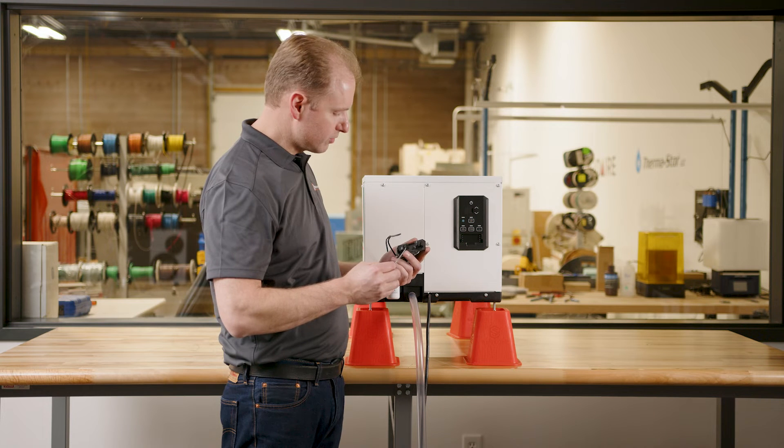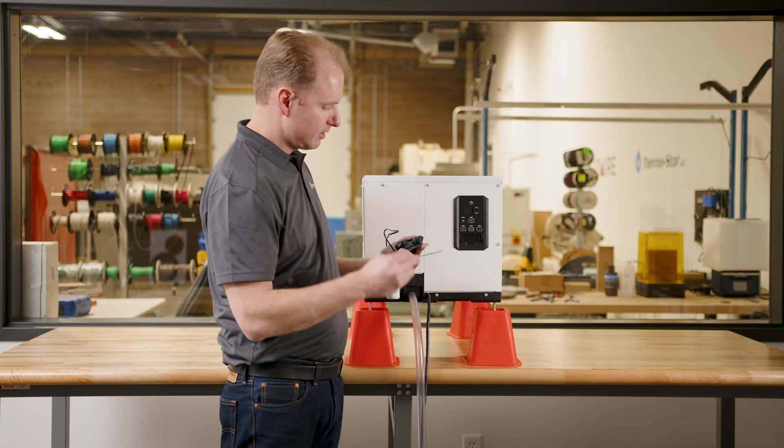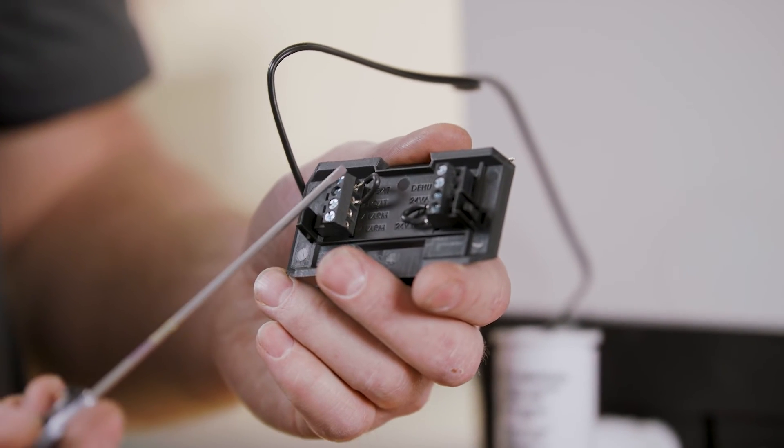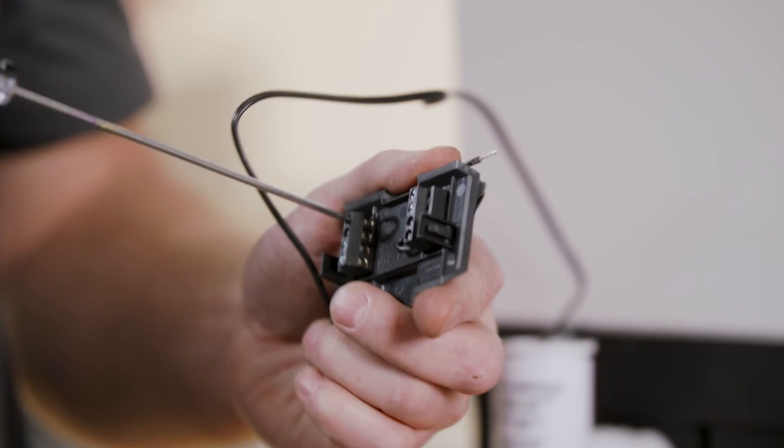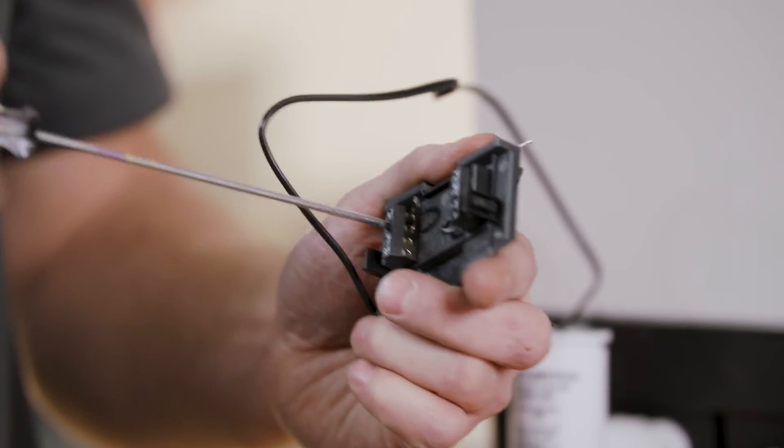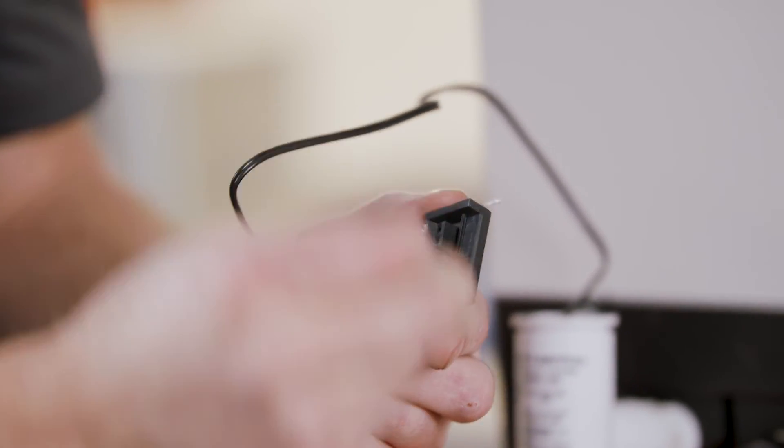You will locate the two float terminals in this upper left-hand corner. It will be denoted with this one jumper wire in place. We will unscrew those terminals and install the float switch wires.